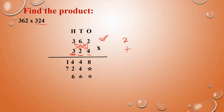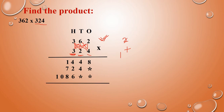Next, 3 into 6: 3 sixes are 18. So 18 means write 8, remaining carry 1. Next, this 3 and the other 3 we have to multiply. So 3 threes are 9. 9 plus carry 1 is 10.